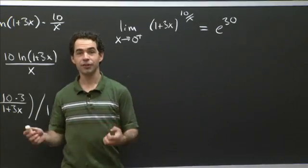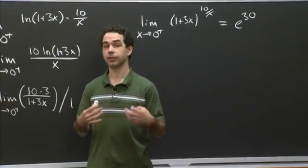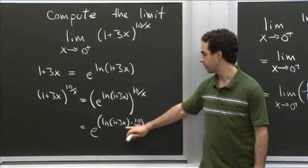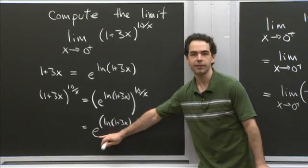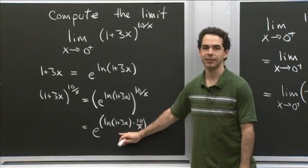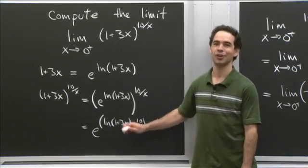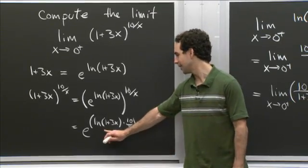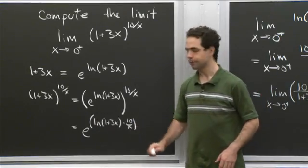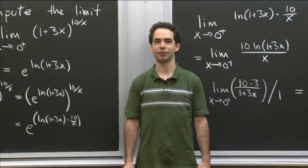So that's the answer to our question. We took our original limit — it was an indeterminate exponential form. When you have an indeterminate exponential form, you do this rewriting as an exponential in base e trick. Then you pass the limit into the exponent, because e is now a nice constant. Then you have an indeterminate product, which you rewrite as an indeterminate ratio, on which you can then apply L'Hôpital's rule. That's how we deal with limits of indeterminate exponential forms.